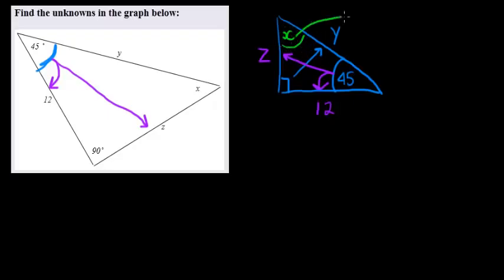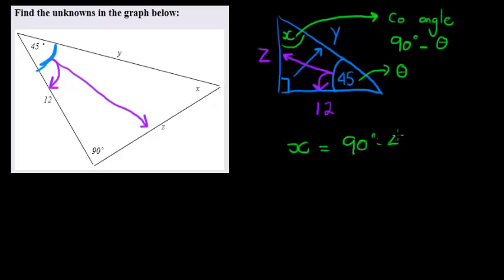Now remember we called this the co-angle. And what we looked at in the previous video is that the co-angle is always equal to 90 degrees minus theta. In other words, this is called theta. So we can immediately go and work out X. X is equal to 90 degrees minus 45 degrees is equal to 45 degrees. So we have X immediately.